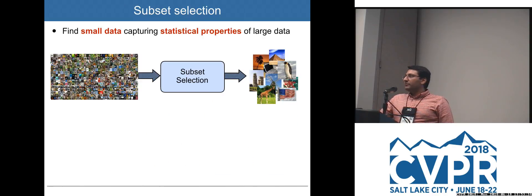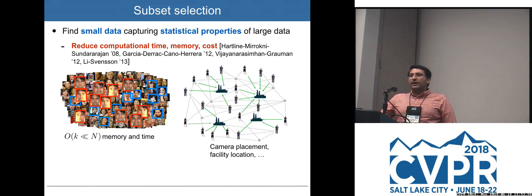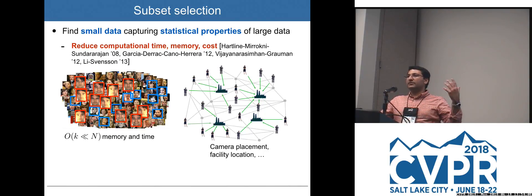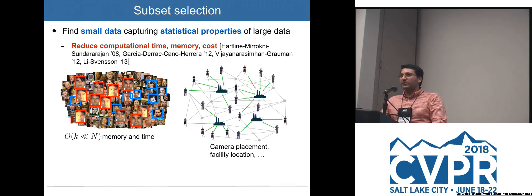This brings us to the main subject of this tutorial: how we can go from very large data sets to small representative subsets that capture the statistical properties of the original data. That is the task of subset selection, also referred to as summarization. One key advantage is that we can significantly reduce computational time and memory while retaining the performance of learning, inference, and decision-making systems.